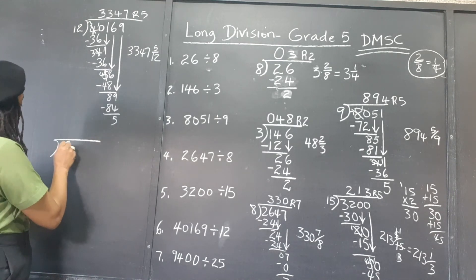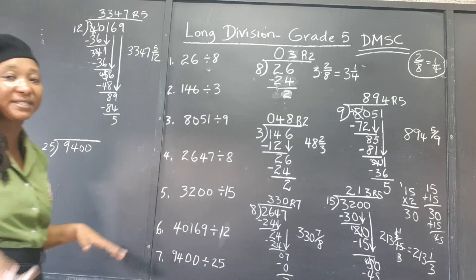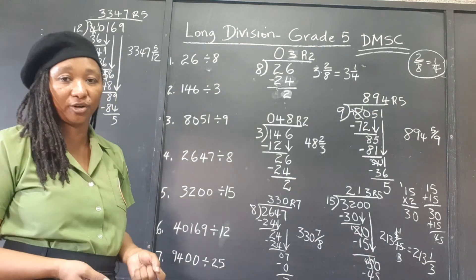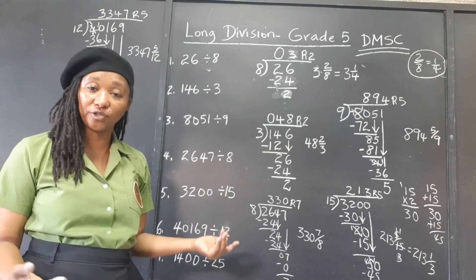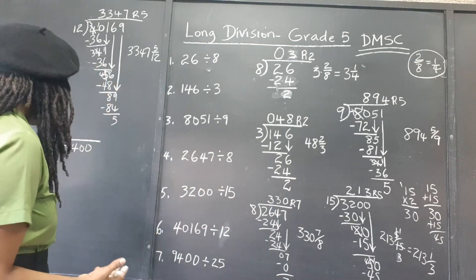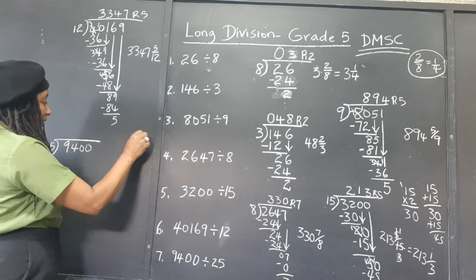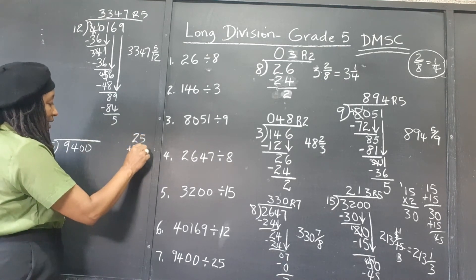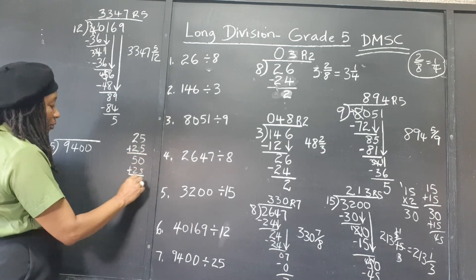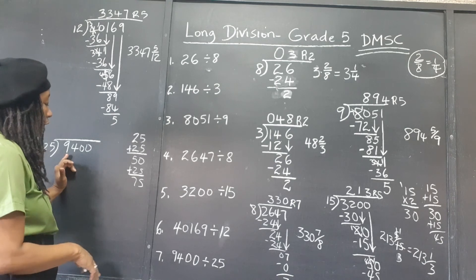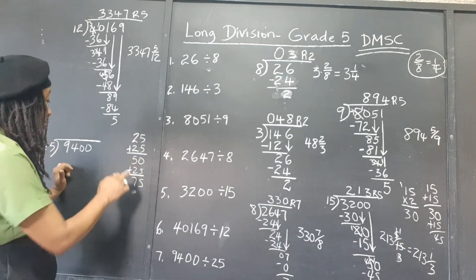Our final example: 9400 divided by 25. The 25 times table is easy — just like the 20 times table: 25, 50, 75, 100, and so on. There are four 25s in 100. Now, 25 into 94: keep adding 25s — 25, 50, 75 — if we added another we'd pass 94 and get 100, so we know it's 3 times.